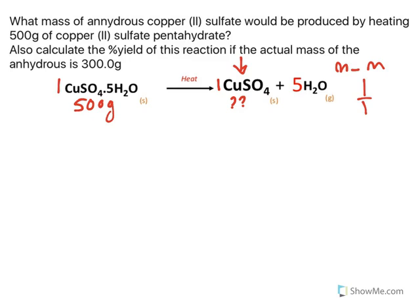So here's the mole ratio, 1 over 1. Now we start: 500 grams. I cannot immediately multiply by the mole ratio. This 500 grams must be turned into moles, and how do you change it to moles? You divide it by the molar mass of CuSO₄·5H₂O.